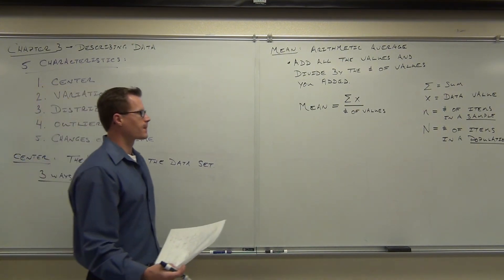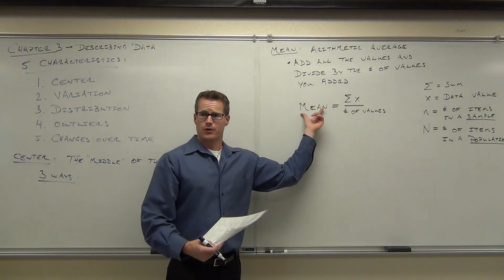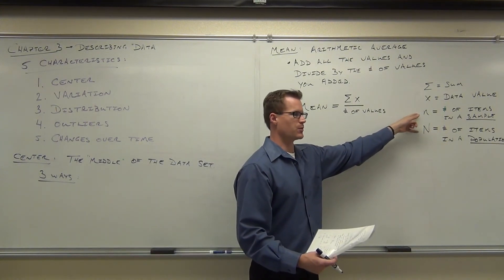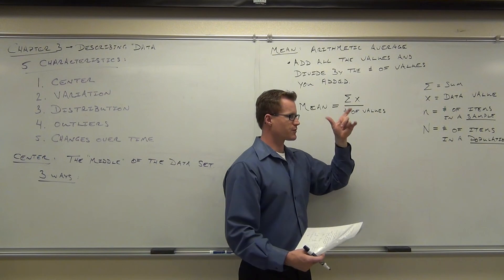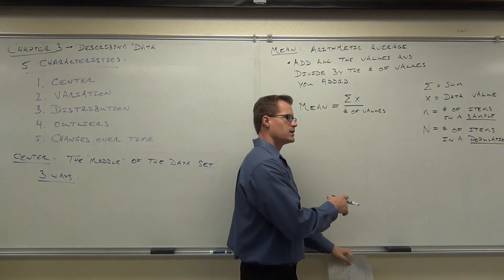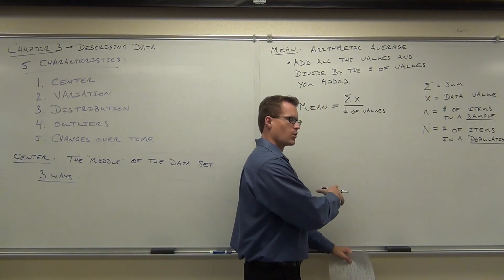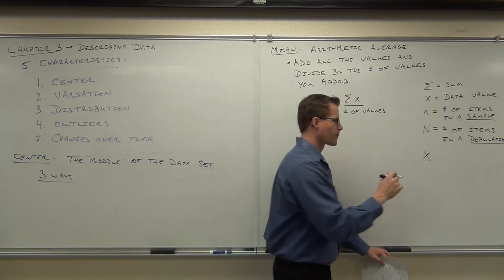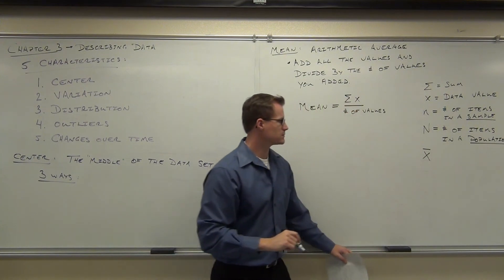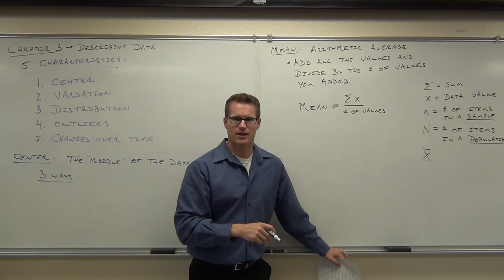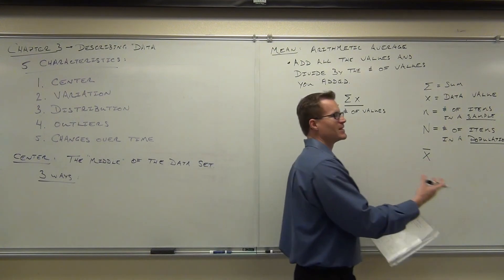That also means if we have a symbol for the mean, it's going to be different for a sample and for a population. If we're talking about the mean of a sample, what we do is we write this X, just like you would a variable, but you're going to put something on top of it, this little bar. So it's X with a little bar on top. You know how you say that? X bar. So this is X bar. It's the mean, it's the sample mean.